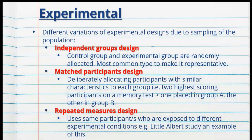An experimental design is probably the one that you are the most familiar with as science students. When you've been in labs at school doing different sciences throughout the years, you would have been in an experimental design — a controlled lab with a lab coat and a very systematic numbered method where you are in complete control of everything. We use the same design in psychology, and it's called an experimental design. There are different variations due to sampling of the population, as in psychology we're working with people and animals.